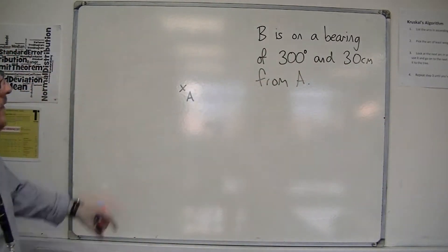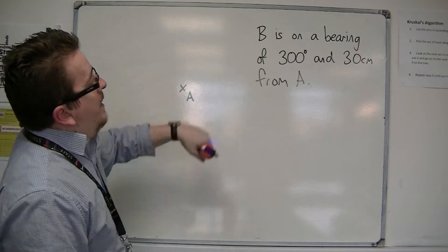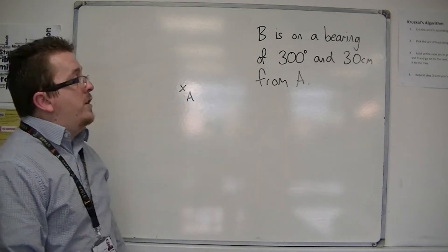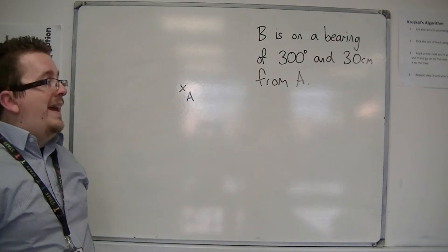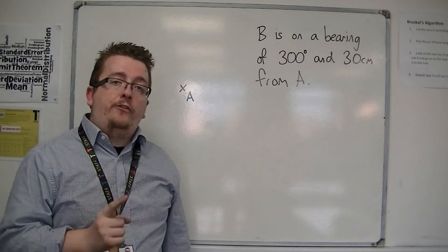So let's say that here is my point A, and I'm told that B is on a bearing of 300 degrees and 30 centimetres from A.